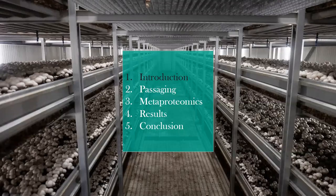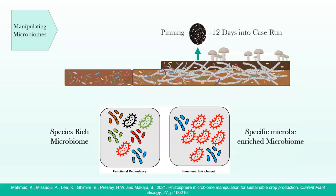Moving into passaging: we're trying to enrich a certain kind of microbiome into the standard casing microbiome. Casing is collected at the point of pinning — at the Mushroom Research Center we have experimental tubs, and when different tubs have optimal pinning, they're selected, the material is taken, and re-inoculated into a fresh casing. This is done at the point of pinning because that's when we believe the most stimulatory microorganisms are present. The idea is to go from a species-rich microbiome to a more specific, microbe-enriched microbiome.